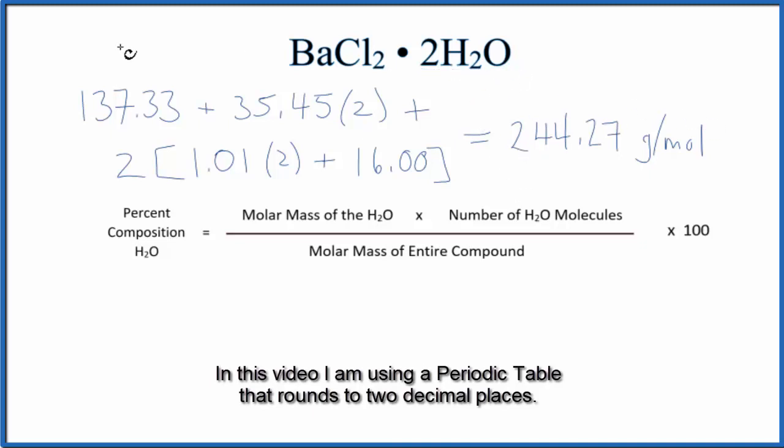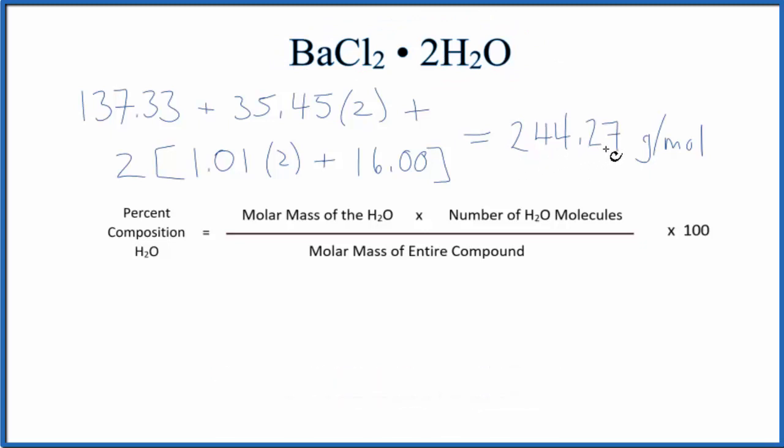So I've calculated the molar mass for the entire compound up here. That ends up to be 244.27 grams per mole. So let's use our equation here to find the percent composition of the water.